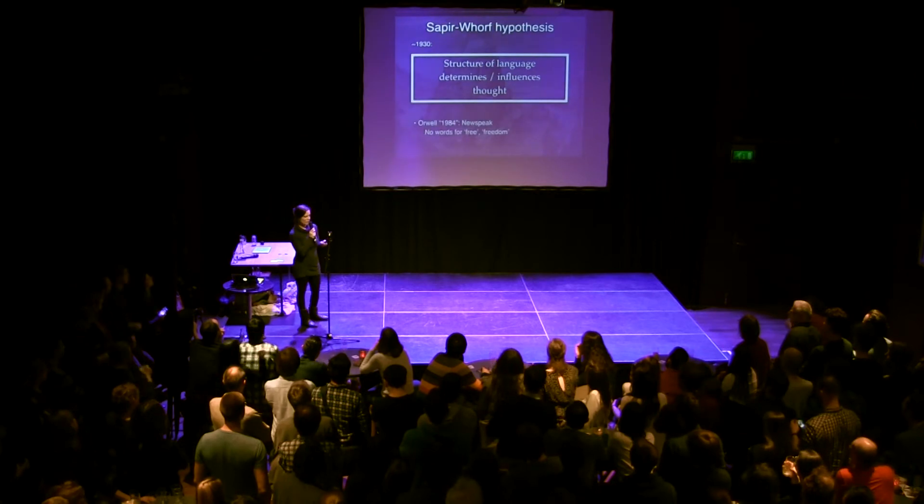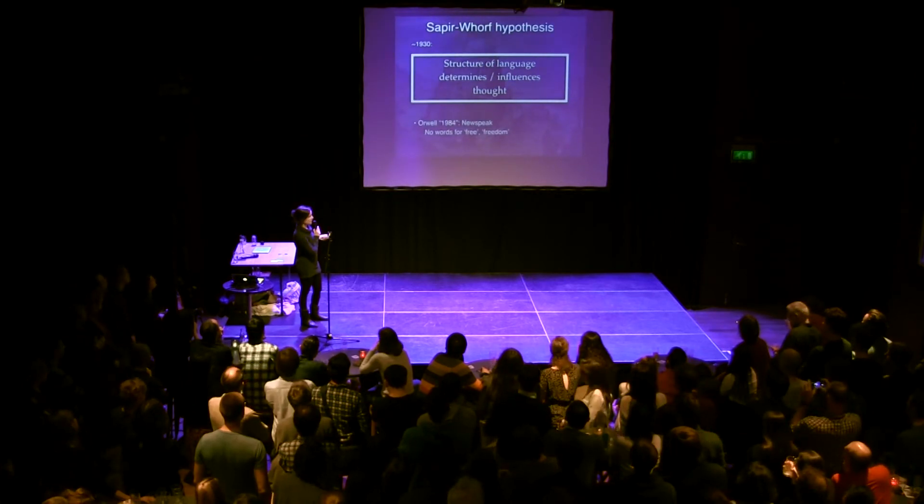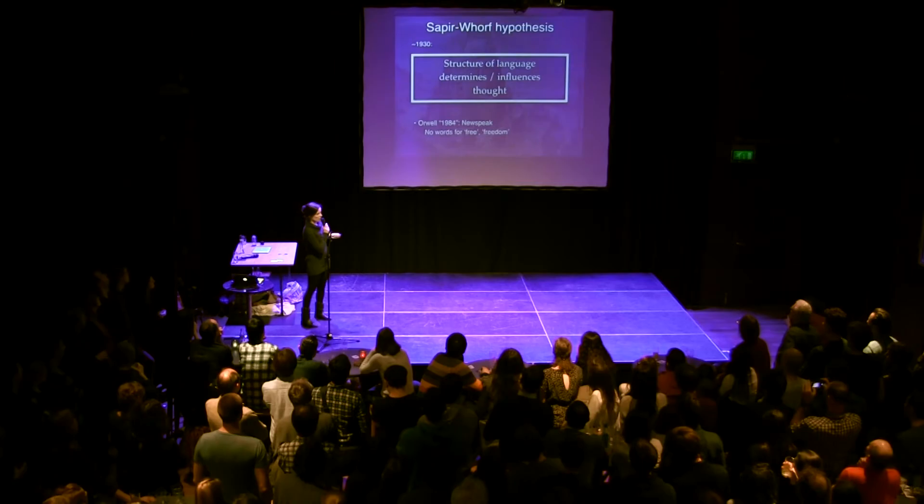What does that mean? For example, there's Orwell's novel 1984. In this novel, you have the language Newspeak, and this language has no word for 'free' or 'freedom.' Orwell thought that if there's no such word, these people cannot even think about freedom. So that's the idea here.